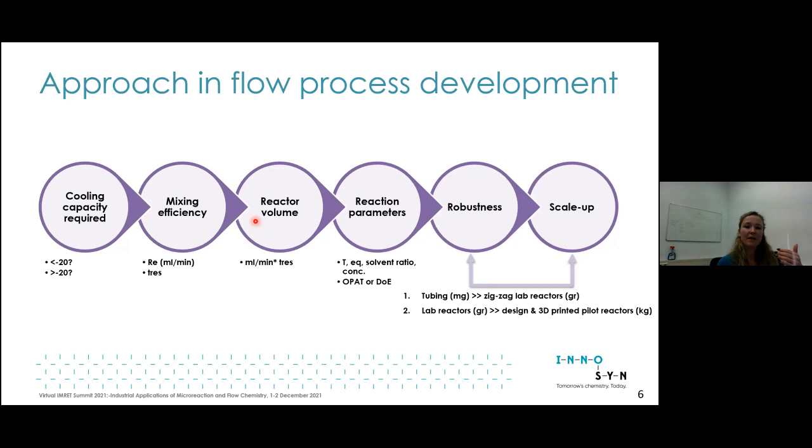We apply two methods and determine the required time for mixing, which has to be shorter than reaction time. Then we determine reaction time. Simply the multiplication of required flow rate and time gives the reactor volume which we use to investigate reaction parameters.